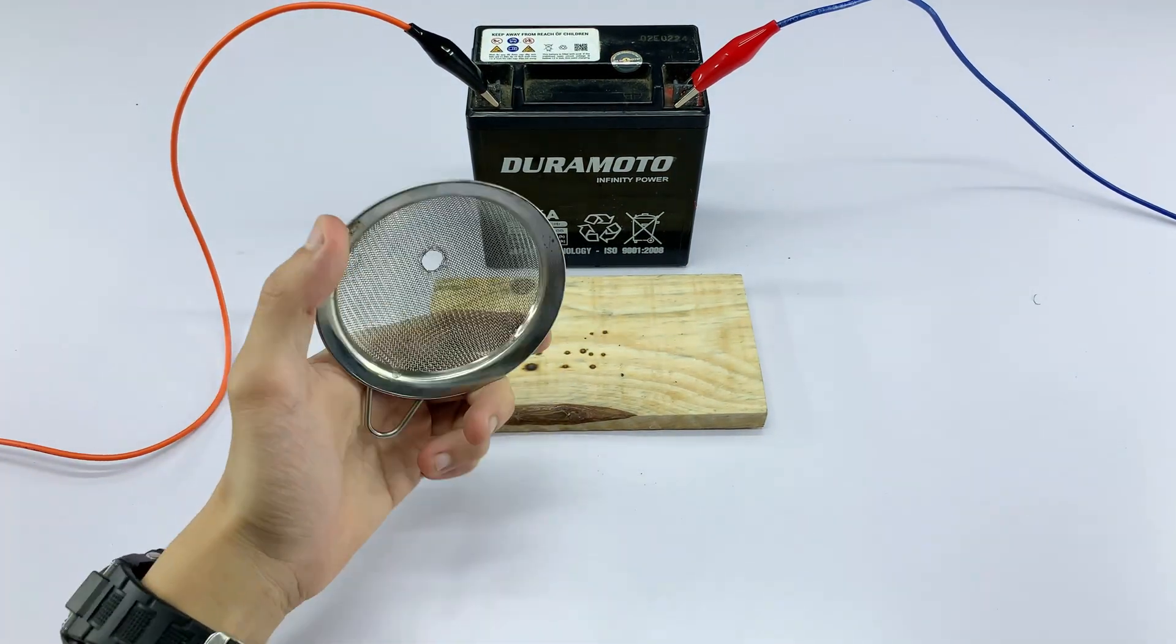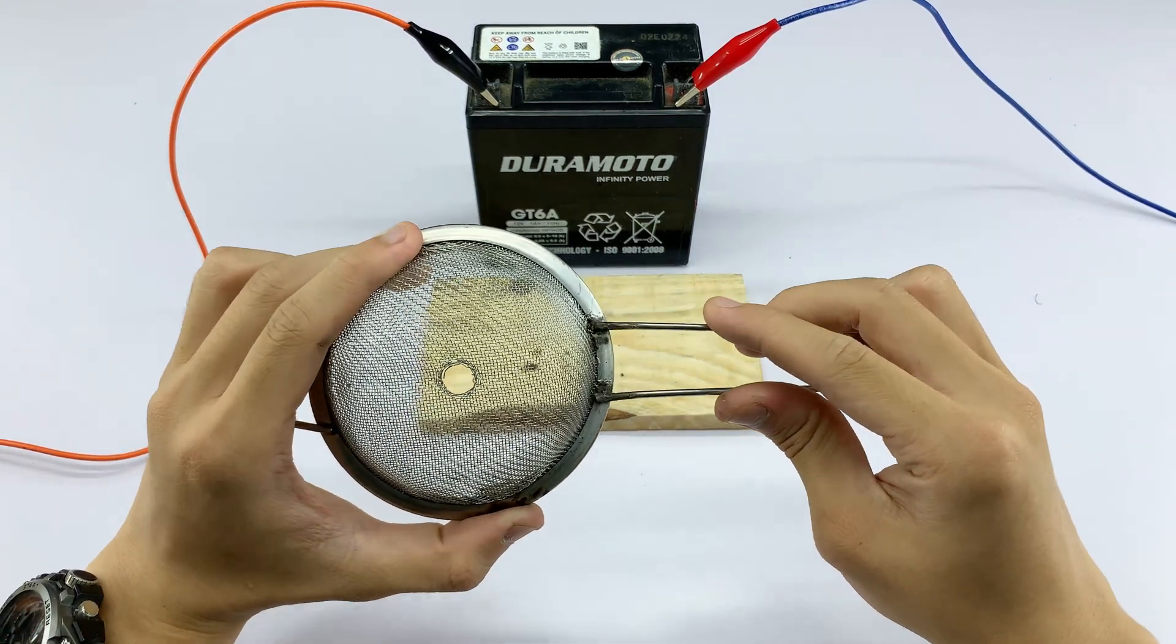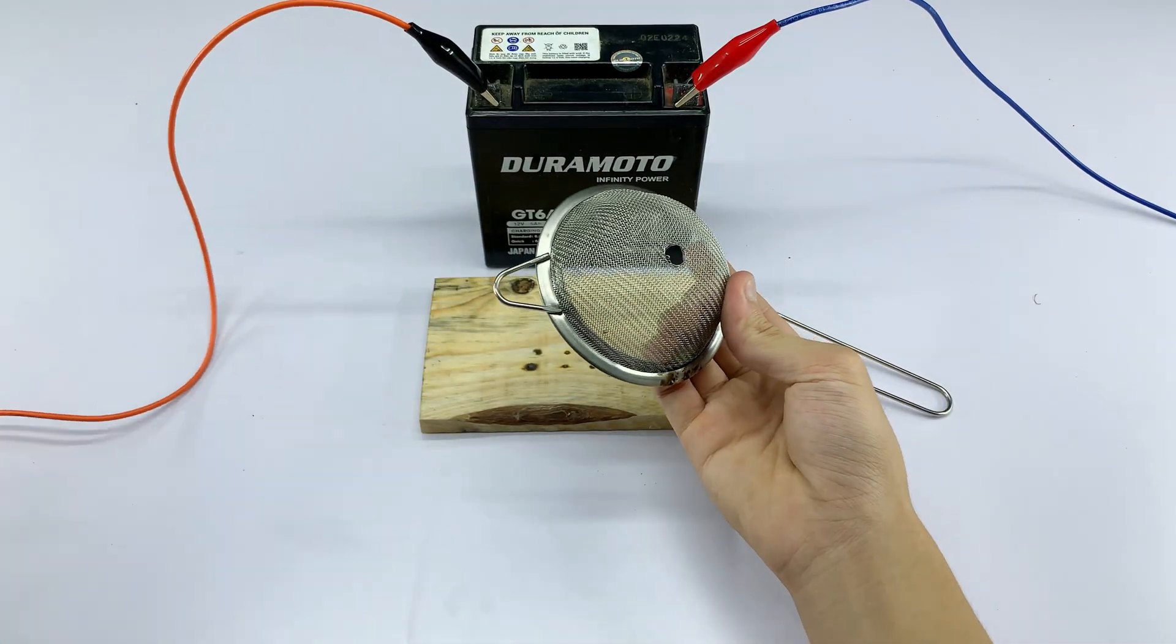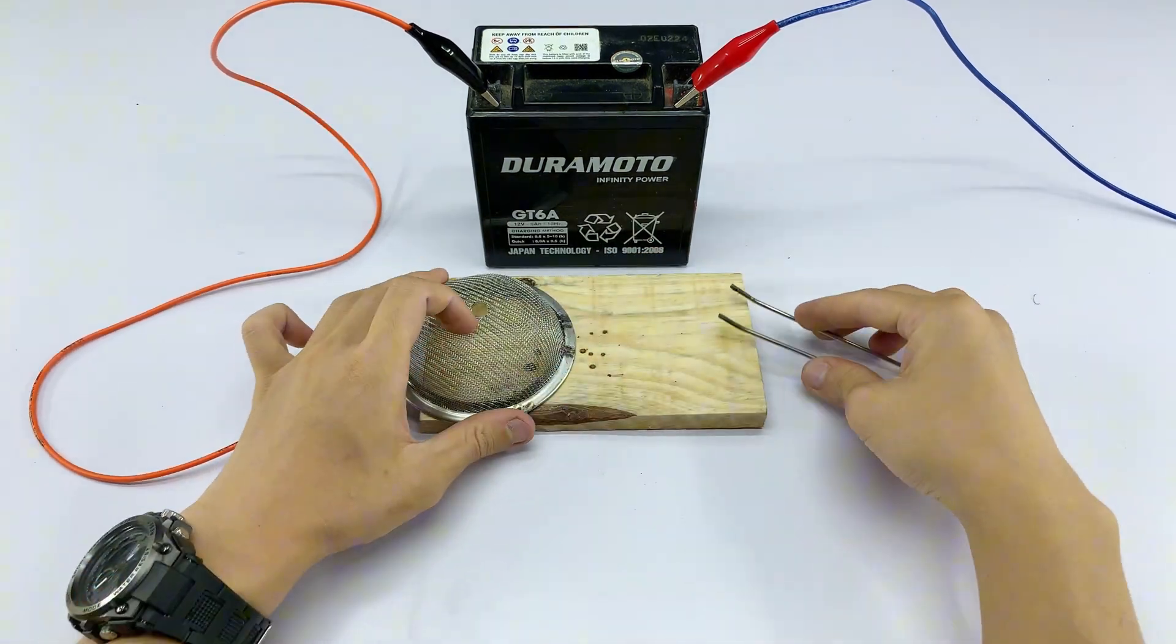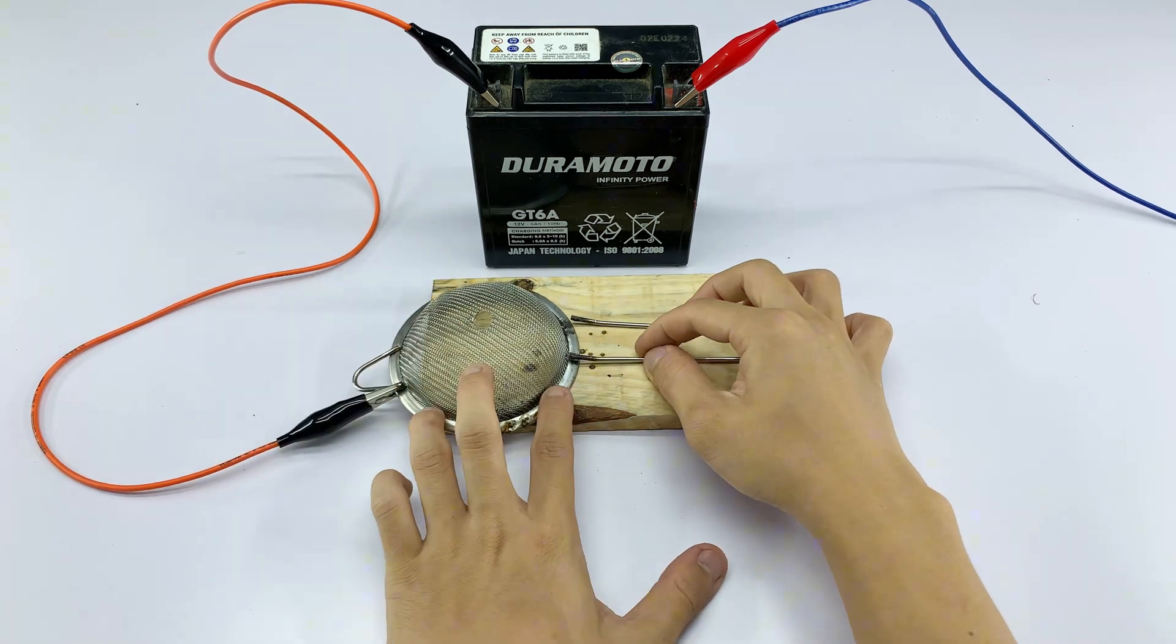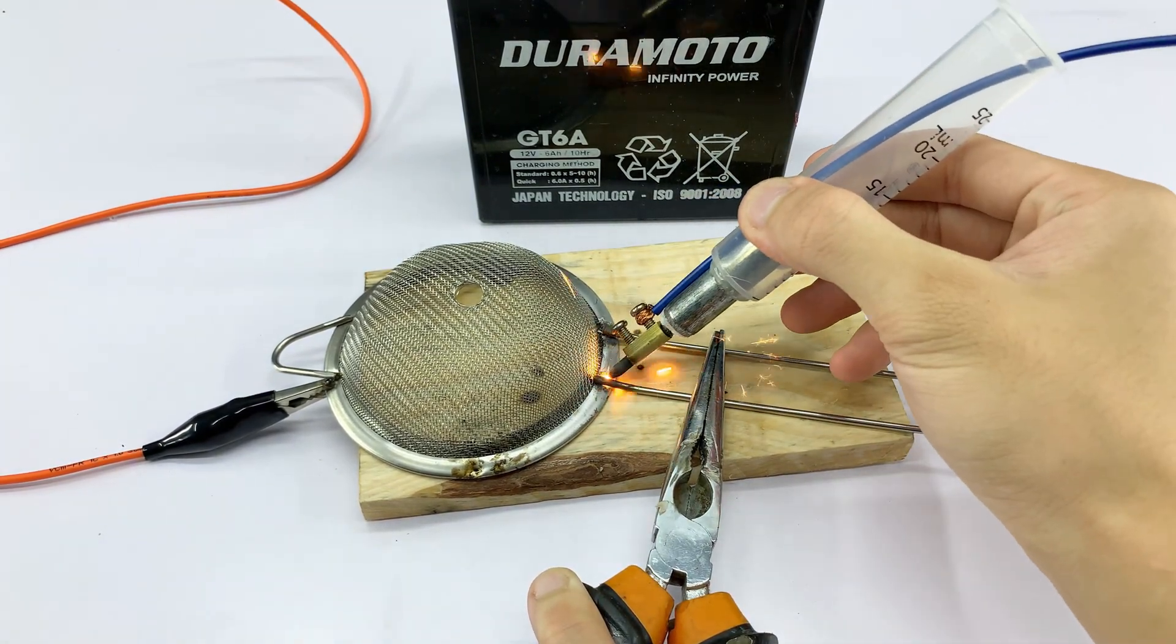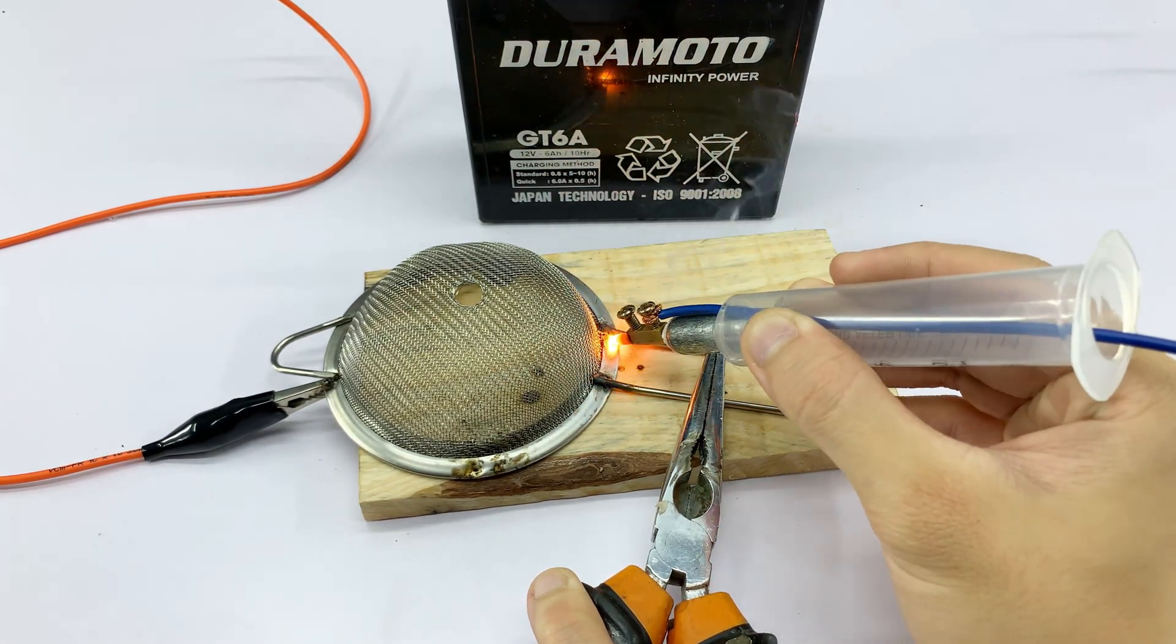For the final hack, I'm taking a small metal strainer. I'm connecting the black alligator clip to the strainer's handle. As I touch the carbon rod to the strainer's mesh, it heats up, turning the strainer into a portable soldering surface.